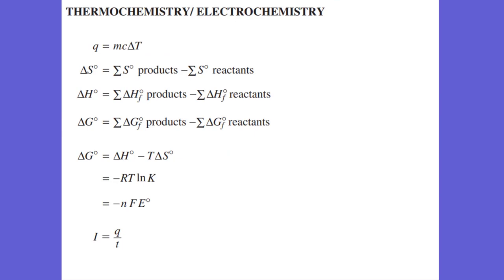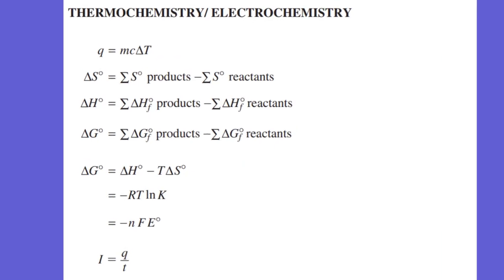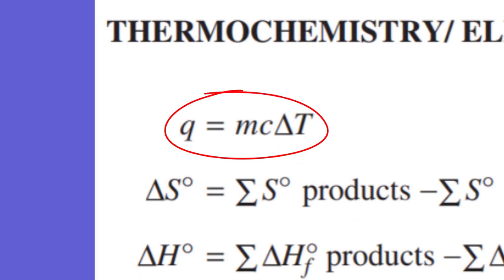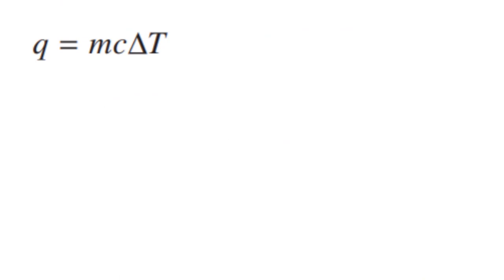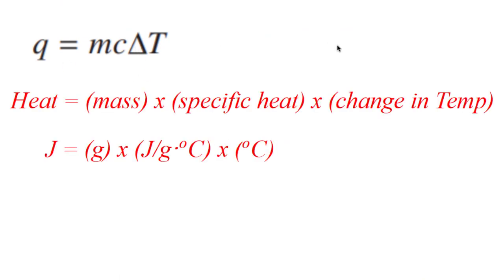So calorimetry. When we take a look at our equation sheet, we have one equation that just yells out calorimetry, or bomb calorimetry, or some sort of caloric experiment, which is Q equals mcΔT. Q is heat and m is mass in grams.